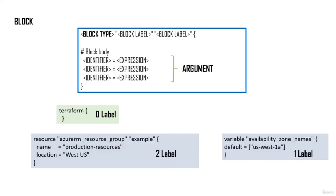Now let's talk about blocks. A block consists of a block type and a list of block labels. Based on the block type, there's a corresponding set of labels, followed by curly braces containing a set of arguments. The most important block type is the Terraform block, which has zero labels. The resource block type has two labels — for example, 'azurerm_resource_group' and 'example'. The variable block type has one label, such as 'availability_zone_names'.